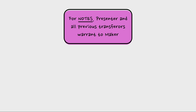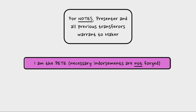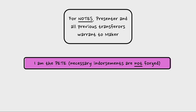For notes, it runs the same way — presenter and previous transferors — but they're warranting to the maker, not the drawee bank. And for notes, there's no warranty about alteration, because you're presenting to the person who made the note — presumably they would know if it was altered, since they know how much they made the note out for.